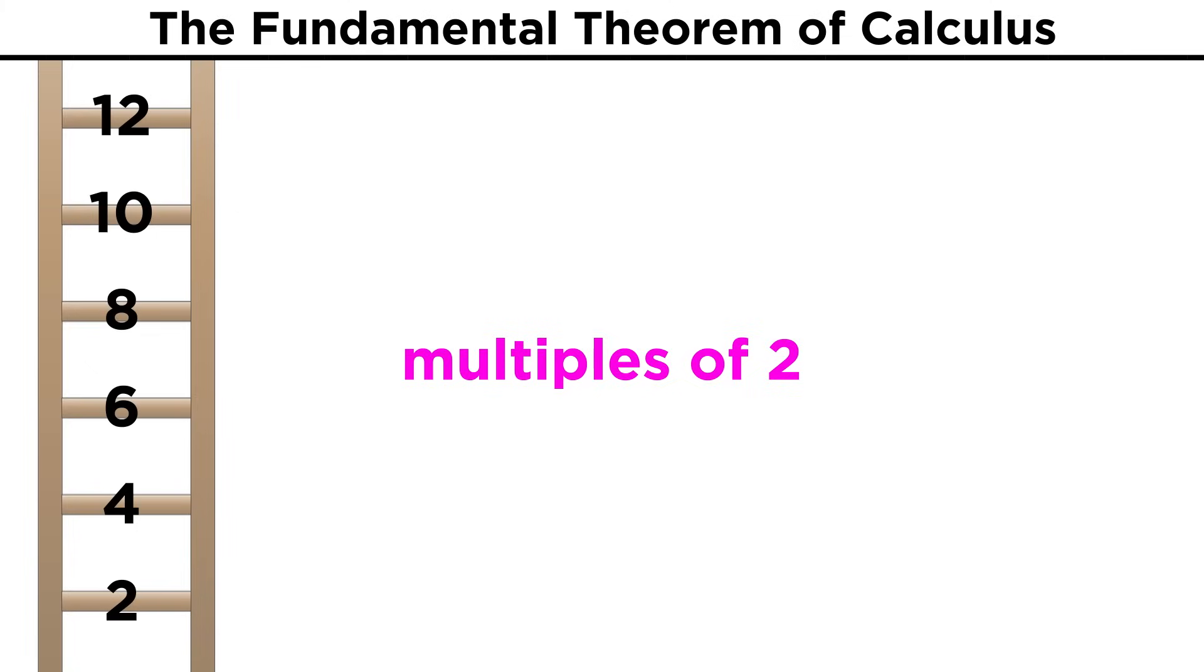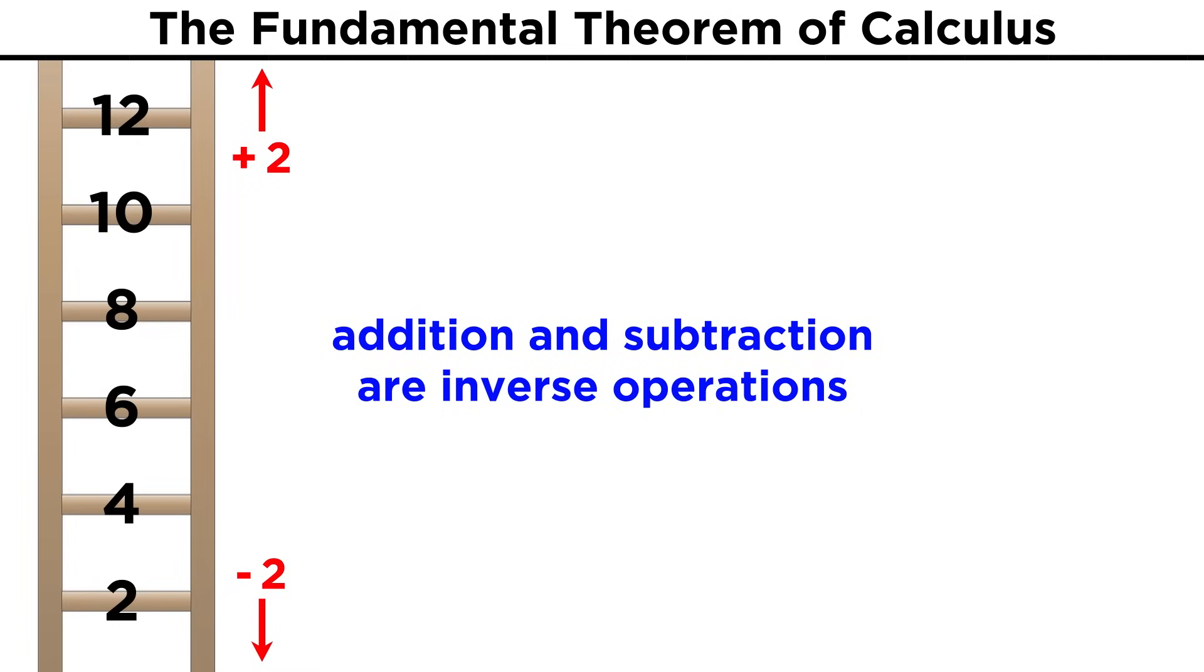If we draw a ladder, and on each rung we write a multiple of two, going up we add two every time, and going down we subtract two every time. Addition and subtraction are therefore inverse operations.